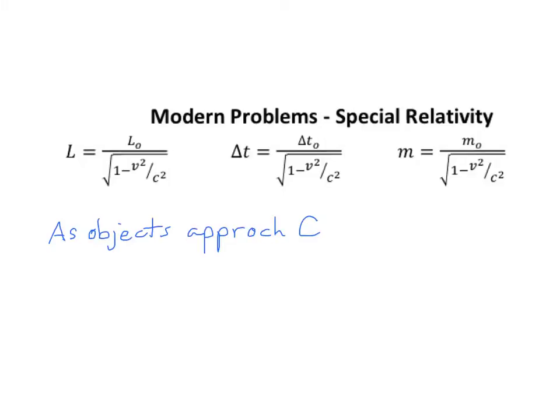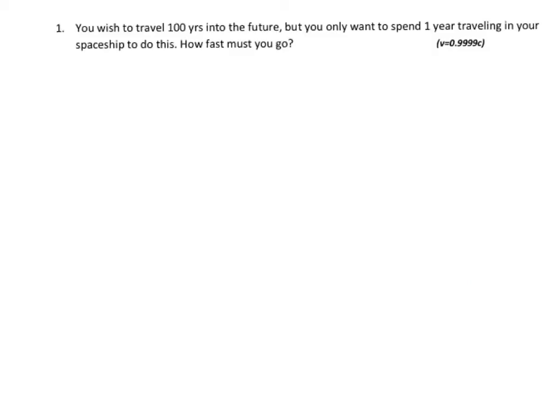Because of these equations, as objects approach the speed of light, we find that they become shorter, slower, or heavier. The key to solving these problems is to correctly identify the frames of reference — which is the stationary value and which is the moving value — and then solving for the correct variable. This requires some particular attention to your algebra skills.